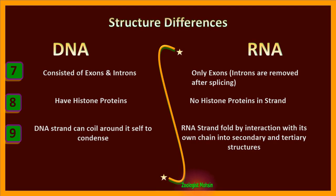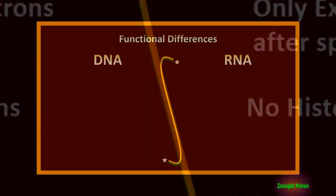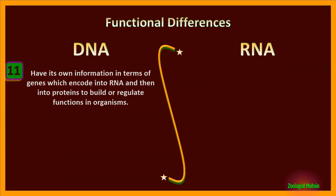Number nine: DNA strand can coil around itself to condense. RNA strand folds by interaction with its own chain into secondary and tertiary structures. Number ten: DNA has transposable elements which jump from one locus to another. Similarly, RNA doesn't have such elements.